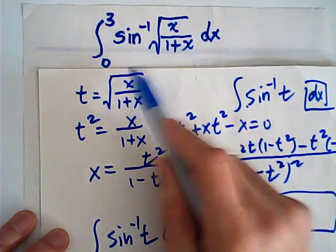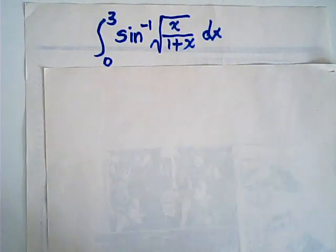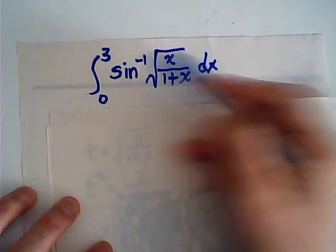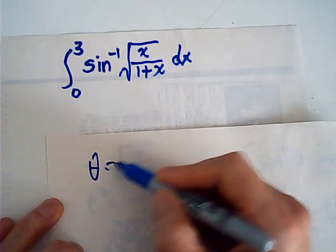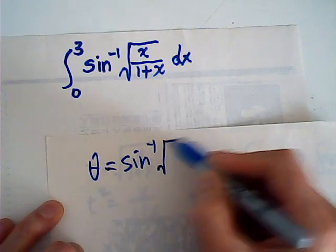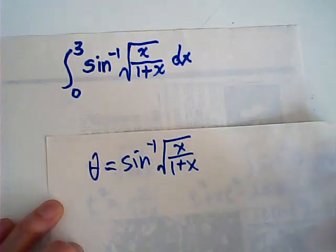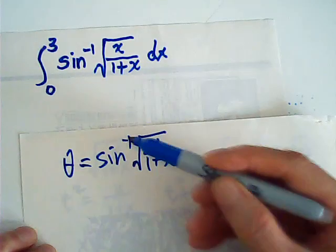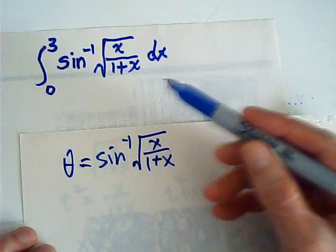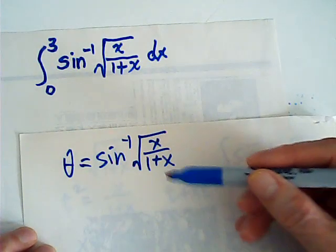So, change the suggestion. How about letting the whole thing be theta, because this is an angle. Let theta be arc sine of square root of x over 1 plus x. The substitution method is just to get rid of our problems — we change the variable and hope that integration with respect to the new variable will be easier.